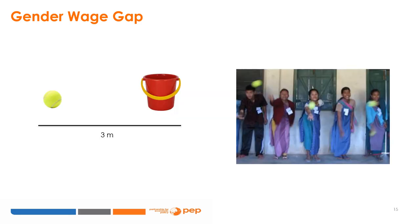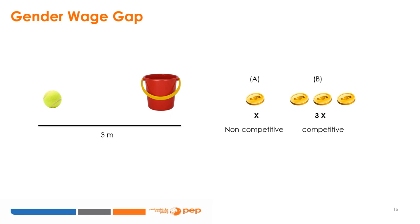The experimental task was to toss a tennis ball into a bucket placed three meters away, with ten tries. A successful shot meant that the tennis ball entered the bucket and stayed there. Participants were asked to choose the manner in which they would be paid for their performance. Option A was a specific amount of money X per successful shot, regardless of the performance of the other participant – a non-competitive payment mode. Option B was three times that amount, 3X, per successful shot, if they outperformed the other participant – a competitive payment mode.